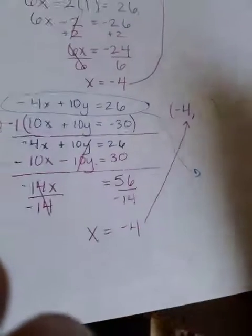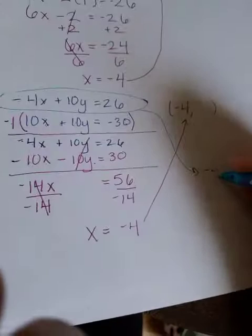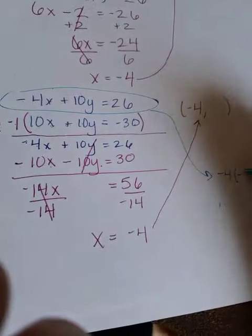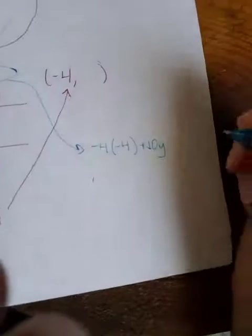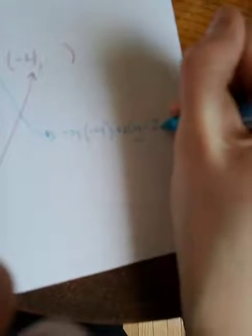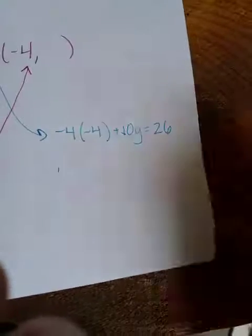I'm just going to pick the first one. Again, I'm going to do my work over here. And I'm going to put negative 4 in for x. So I have negative 4. Instead of writing x, I'm writing negative 4 plus 10y. Oh gosh, sorry, I'm focusing on the wrong thing. Equals 26. Negative 4 times negative 4 is 16.